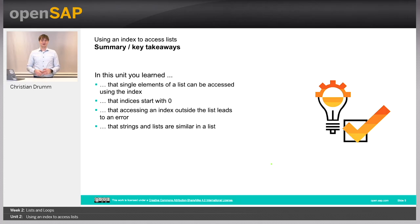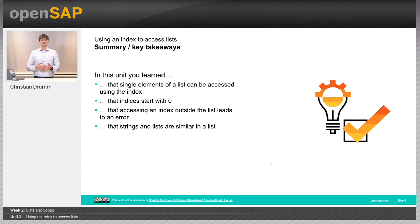So what have you learned in this unit? You have seen that you can access individual elements of a list using their index, that this index starts at zero, and that trying to access an index outside the bounds of a list results in an error. Finally, we saw that strings are quite similar to lists, so we can access individual characters of a string using an index as well. Thanks for watching and see you in the next unit.